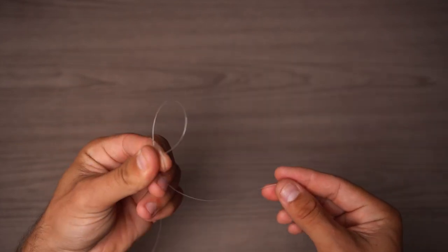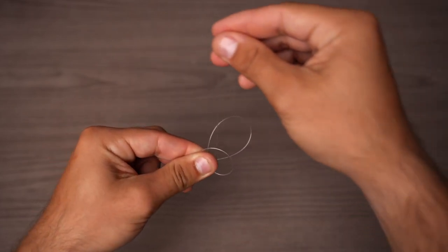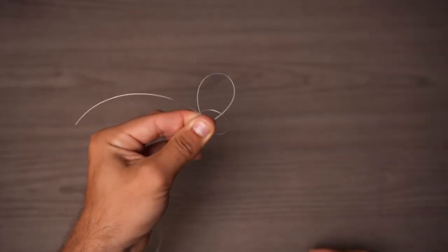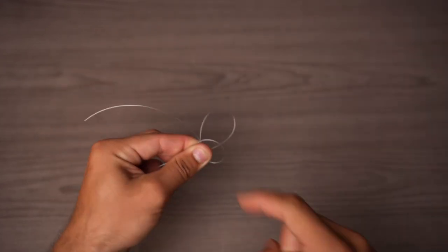Then we're going to take this tag end, and we have our first loop here, our second loop here. We're going to go in between both of those loops and pinch it right there. So now we have our first loop, our second loop, and our tag end in between.